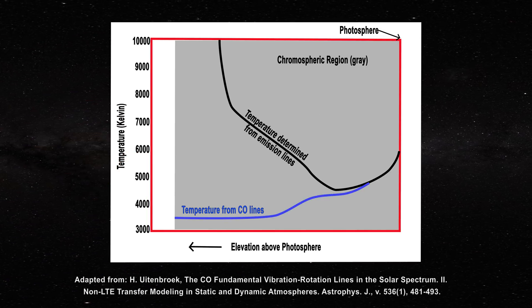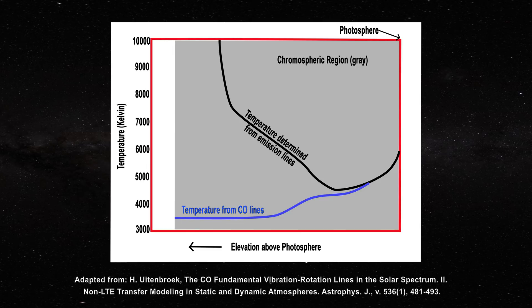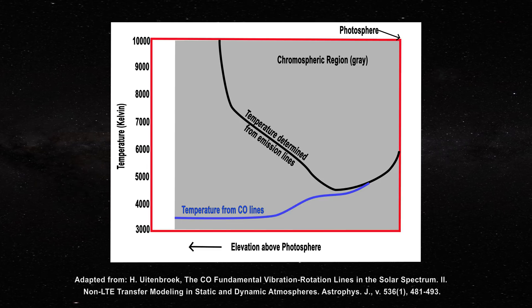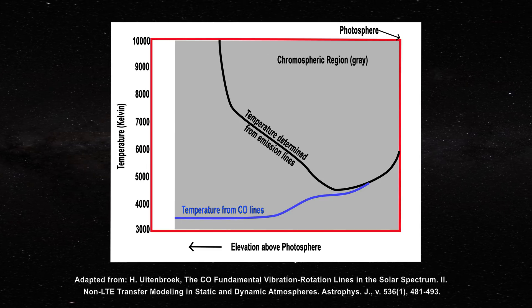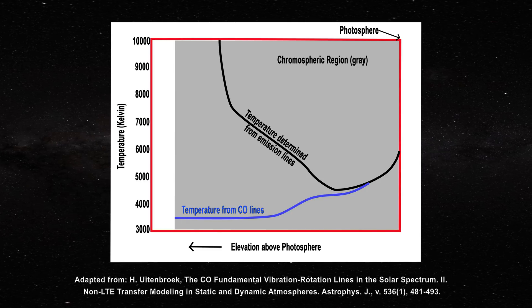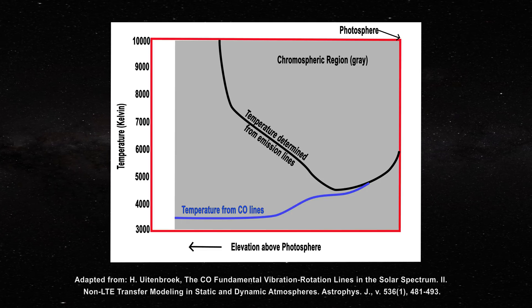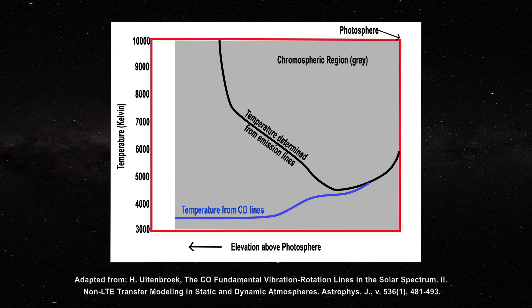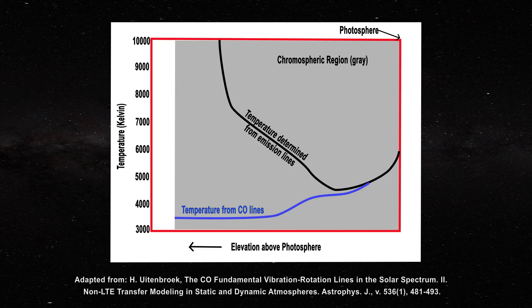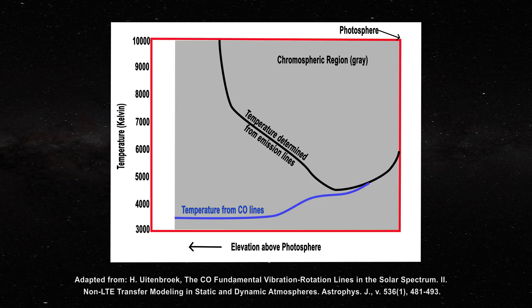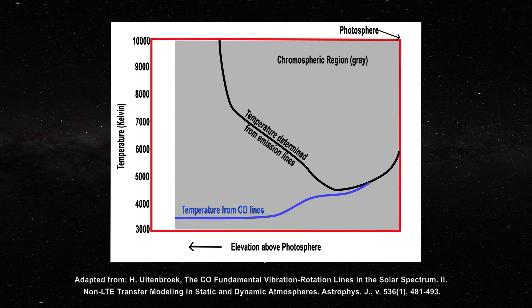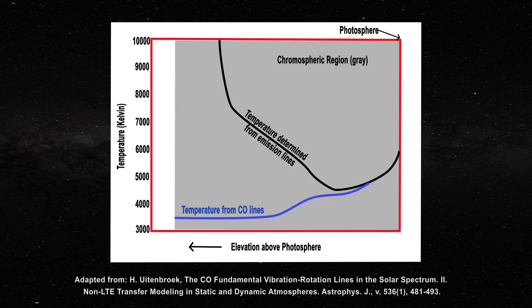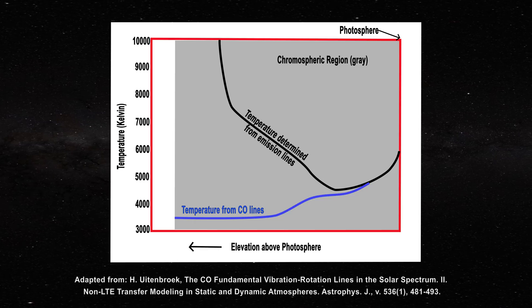Note when chromospheric temperatures are measured with emission lines they eventually rise dramatically with elevation above the photosphere just as I had discussed above. This is denoted by the solid dark lines. However if you measure the temperature with carbon monoxide vibrational rotational lines the temperature is dropping with elevation as noted by the solid blue line. That is a serious problem for the astronomers.